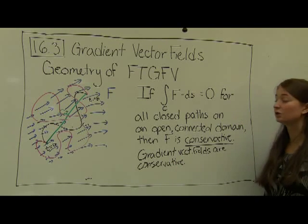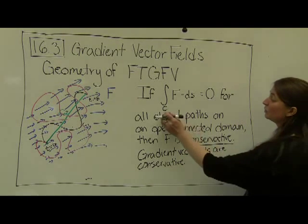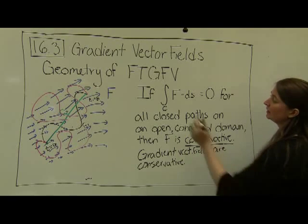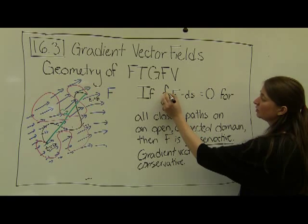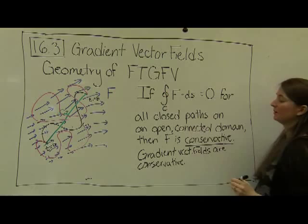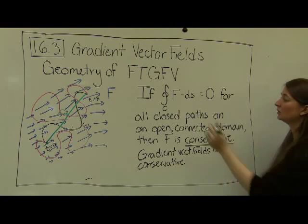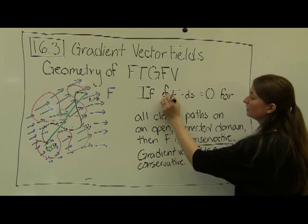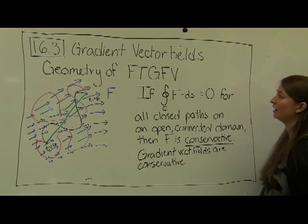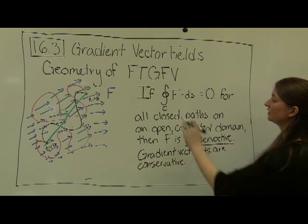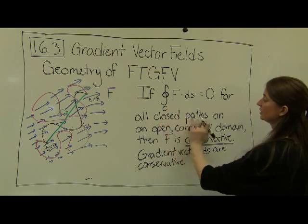The other thing that I want to point out, that's sort of a notational thing, is that when c is a closed path, sometimes notationally we indicate that by writing a circle there. So, this circle in the center of our integral, when we're representing our vector line integral, the circle says that c is a closed path. So that's something to highlight as well.